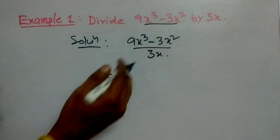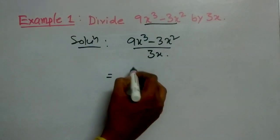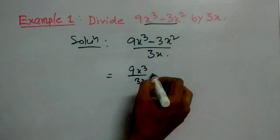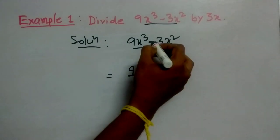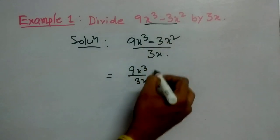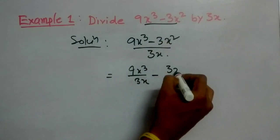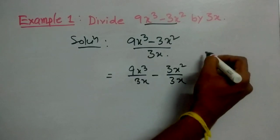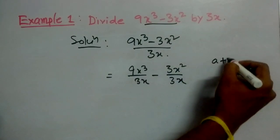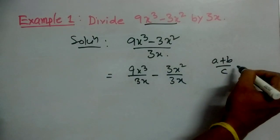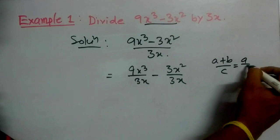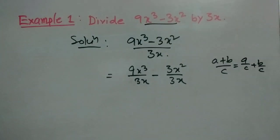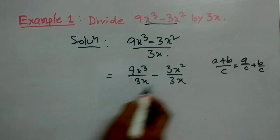So let us split this as 9x cubed divided by 3x, minus 3x squared by 3x. As we know that (a + b) divided by c equals a/c plus b/c. So this rule has been applied over here.